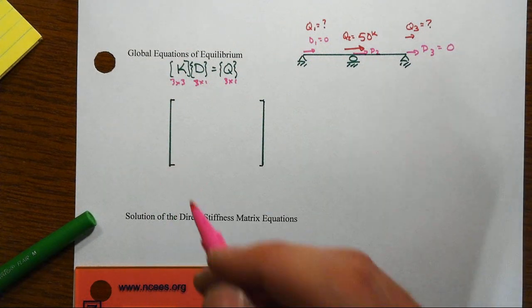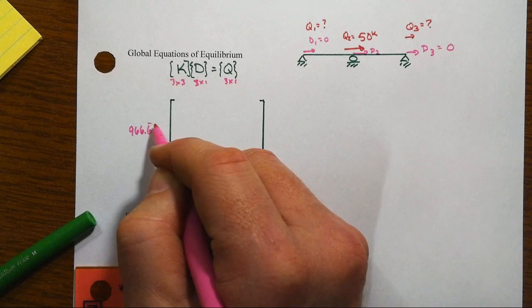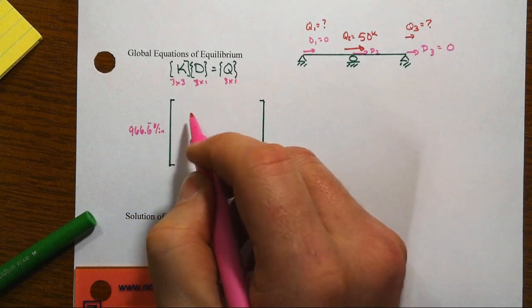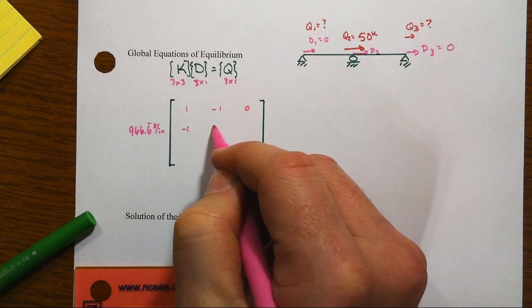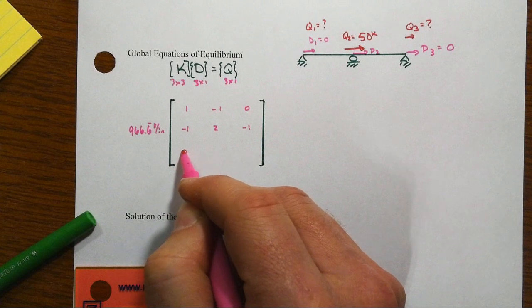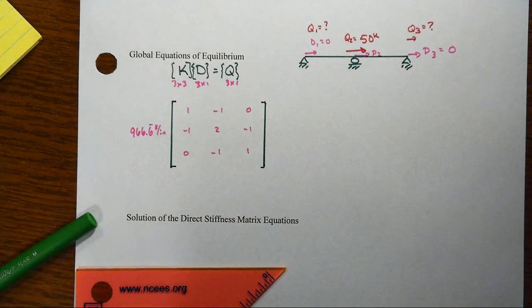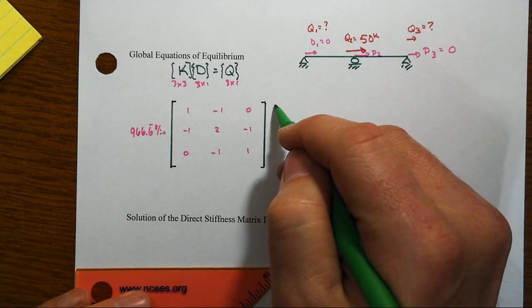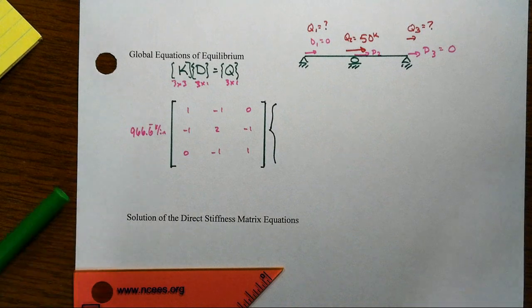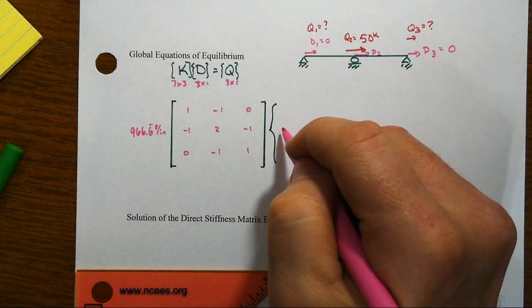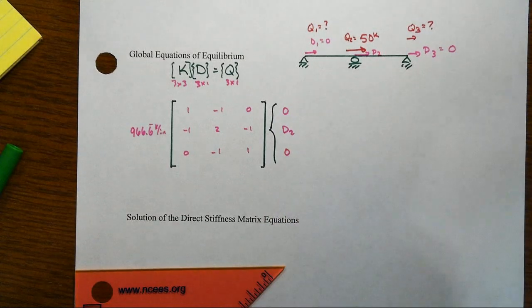From our previous work, this is 966.6 repeating kips per inch, and we had a 1 here, minus 1, 0, minus 1, a 2, minus 1, and then 0, minus 1, and 1 again. In our case, we don't know D2, but we do know that D1 and D3 are 0.